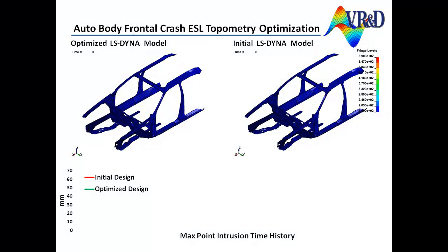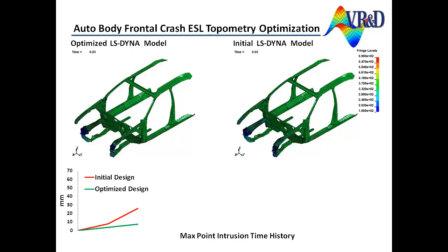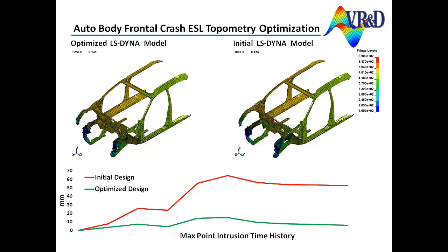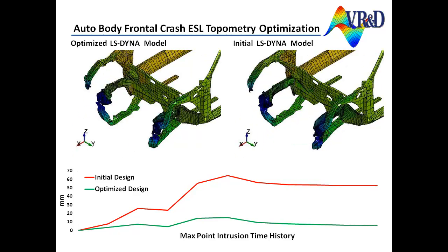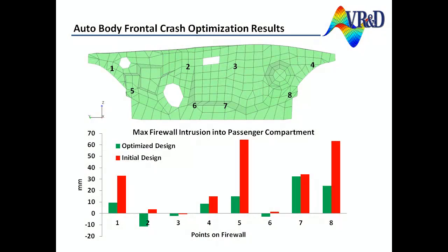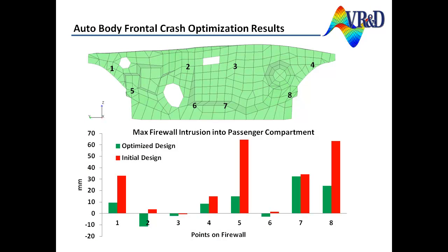Here is an LS-Dyna fringe animation comparison of the initial design versus the optimized design. The relative displacement results show that intrusion of the firewall into the passenger compartment has been reduced at all eight measurable points. Total mass has been redistributed and increased by less than 10 kilograms.